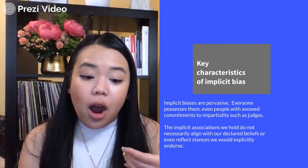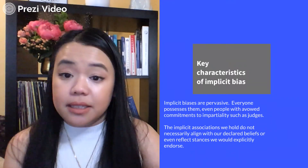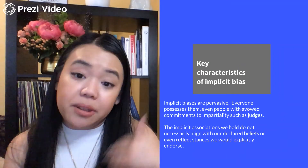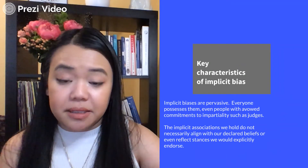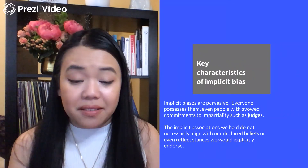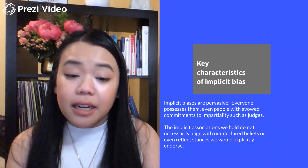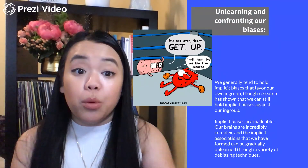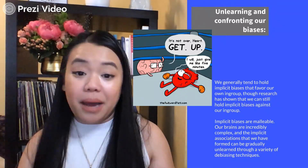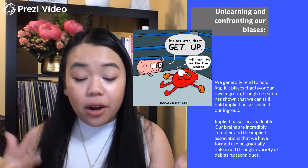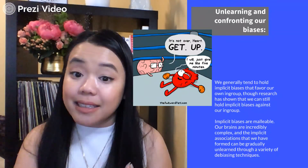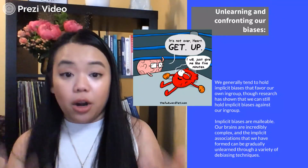That's why our criminal justice system doesn't necessarily always reflect fairness and equality and equity for all people who go through it. However, remember that implicit bias is something that once you're aware of it, you can confront it and unlearn it. It's not like you're stuck with implicit bias forever. We are able to mitigate the bad effects of having implicit biases if we just self-reflect and are aware of them.